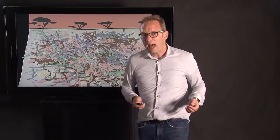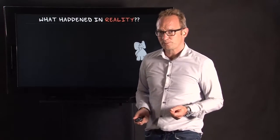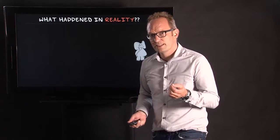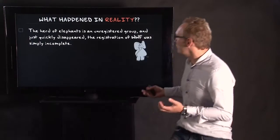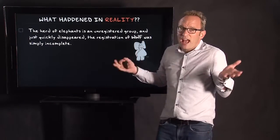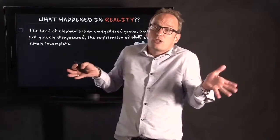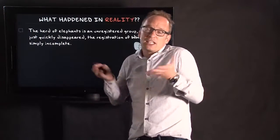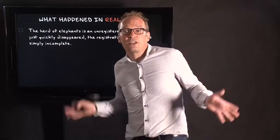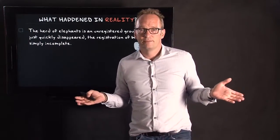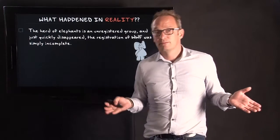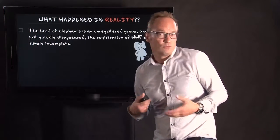So the question may arise, what happened here? What happened here with these angry elephants? What happened here in reality? We can say, think about this. What we can say, for instance, is the herd of elephants is simply an unregistered group and just quickly disappeared and the registration of the wildlife foundation was simply incomplete. It's a possibility. Seems pretty logical.